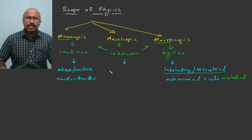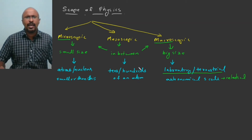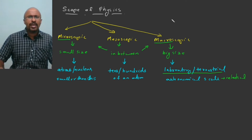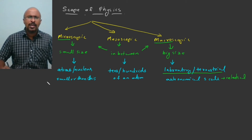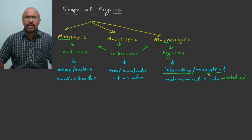The mesoscopic domain covers sizes of the order of tens or hundreds of atoms. To summarize, the three domains are: microscopic — size of the order of atoms, nucleus, or smaller; mesoscopic — tens or hundreds of atoms; and macroscopic — laboratory, terrestrial, or astronomical scale.